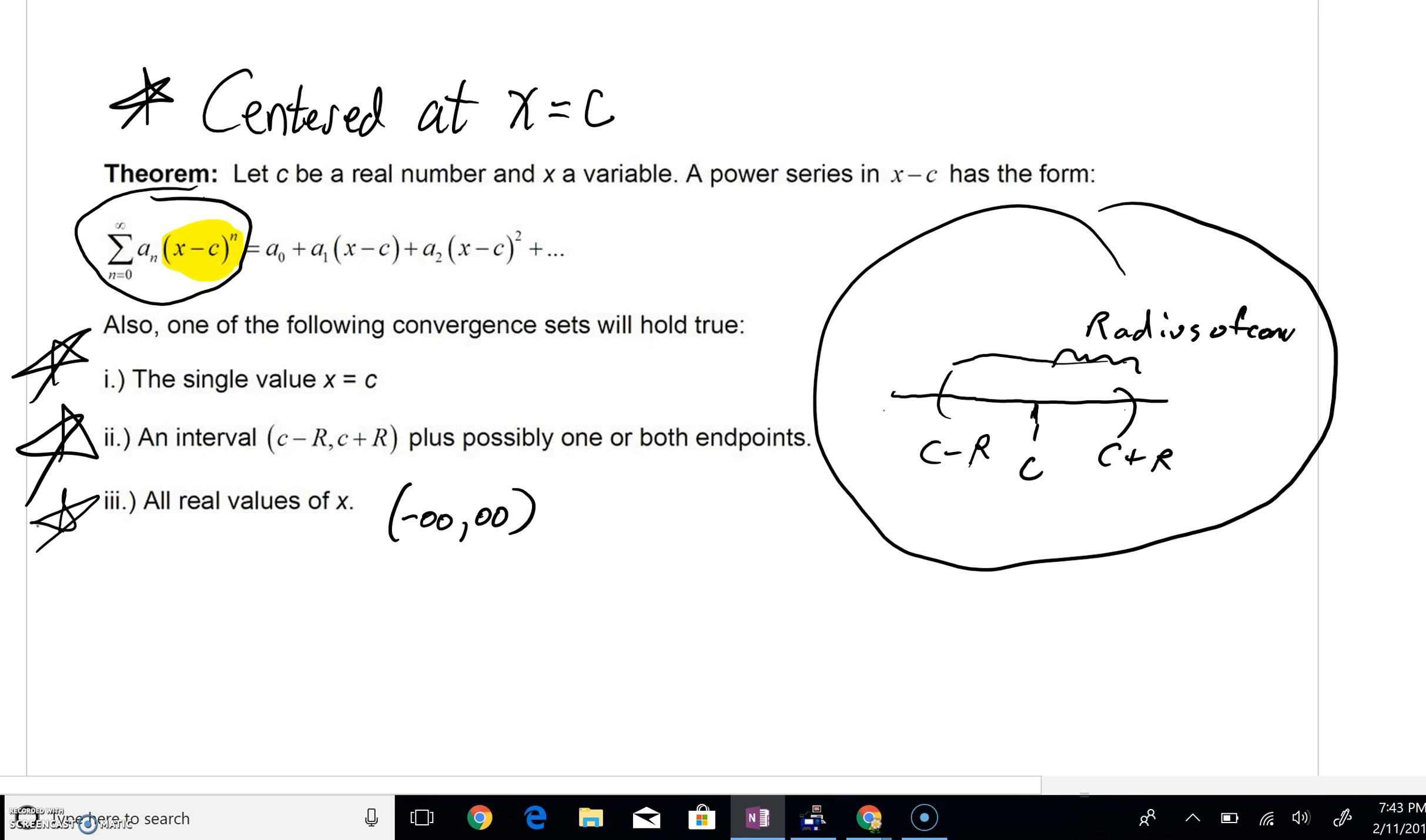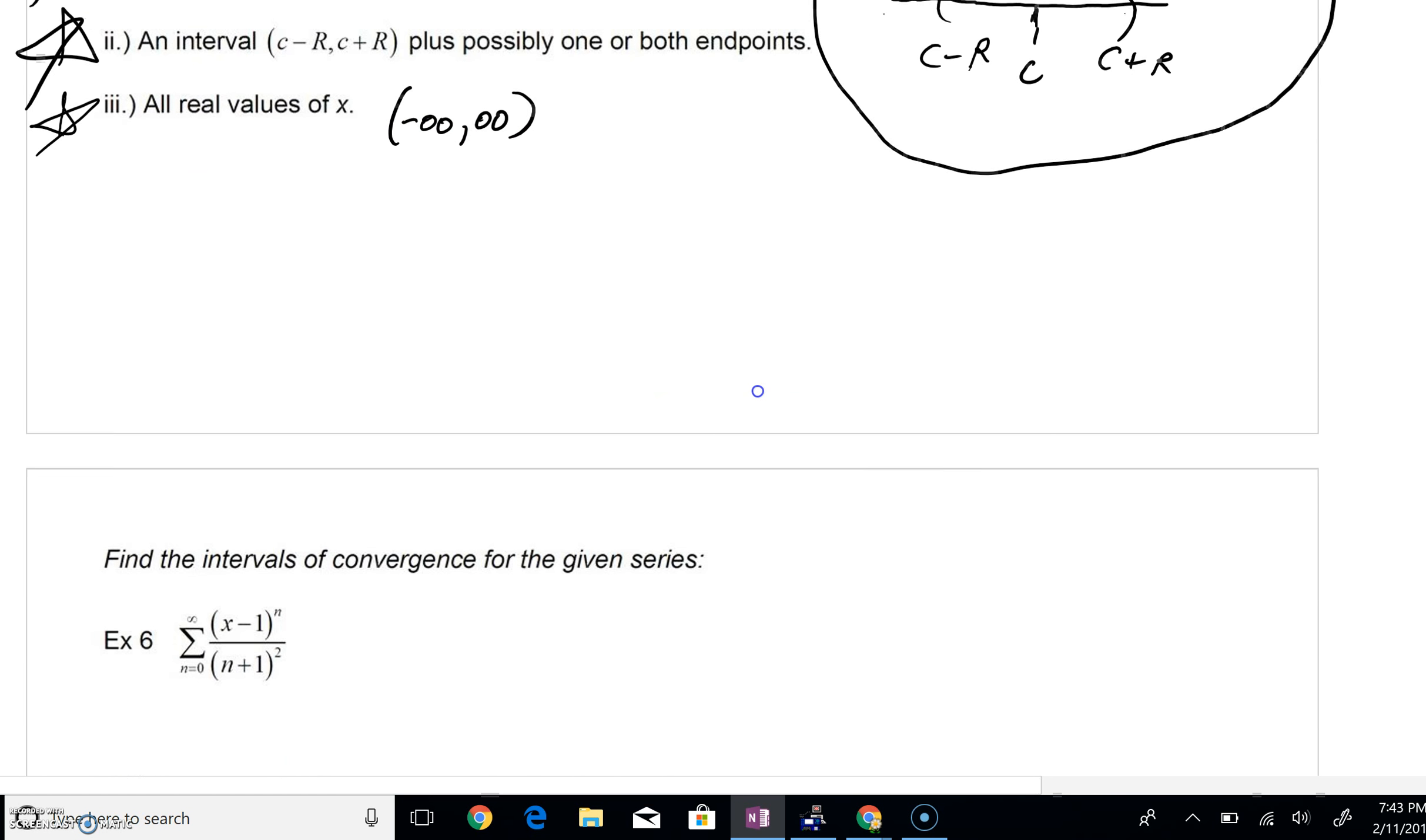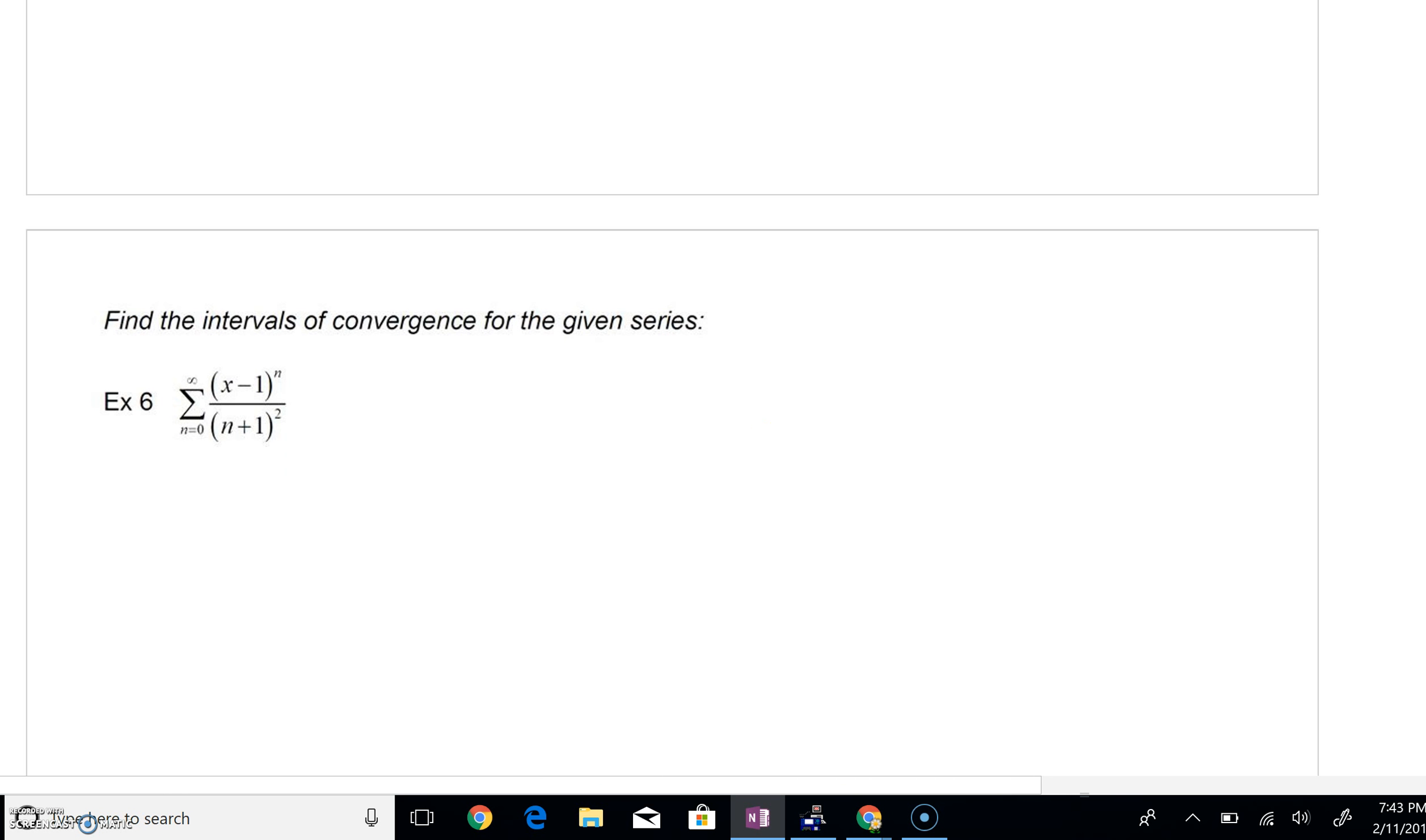Let's see how this could come into play. We've got one last example, and then another example that we'll just set up. But as we look at example six, let's think about where we're centered first. As we're looking right here, here's sigma, n equals zero, x minus one to the n, all over n plus one to the second. This would be centered at x equals one.